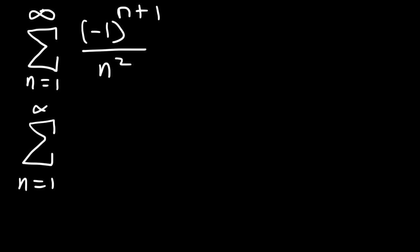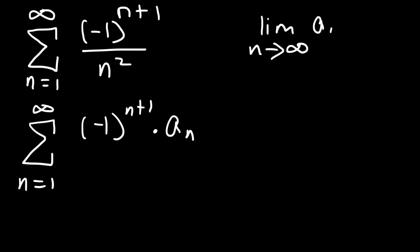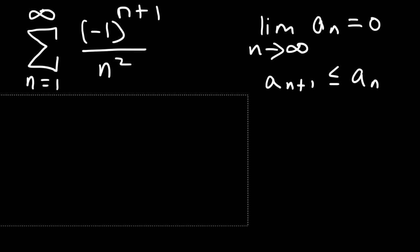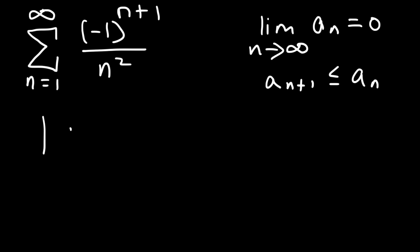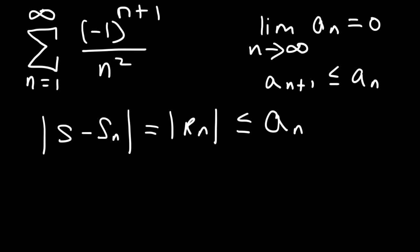Let's say we have an alternating series. It could be negative 1 to the n or negative 1 to the n plus 1 times a sub n — that's the general form. This series has to be convergent, which means it has to pass the divergence test: the limit as n goes to infinity of a sub n has to be zero, and it also has to be a decreasing sequence — the next term has to be less than or equal to the previous term. If you have a convergent alternating series, the difference between the infinite sum and the partial sum equals the remainder, and the remainder is less than or equal to a sub n plus 1.